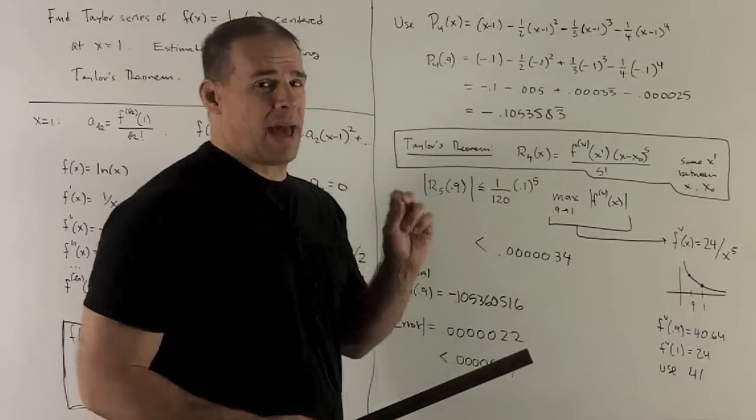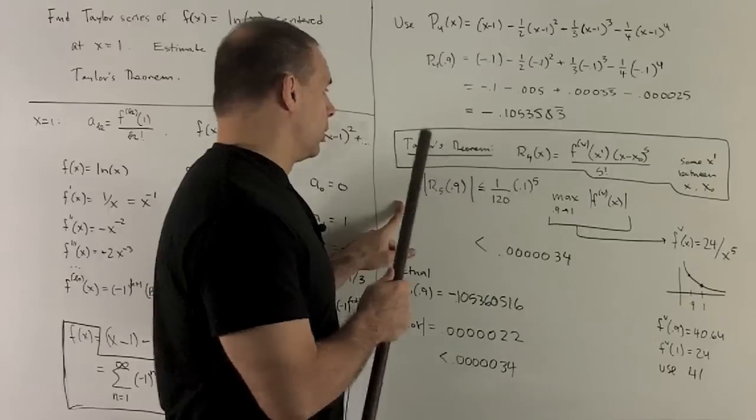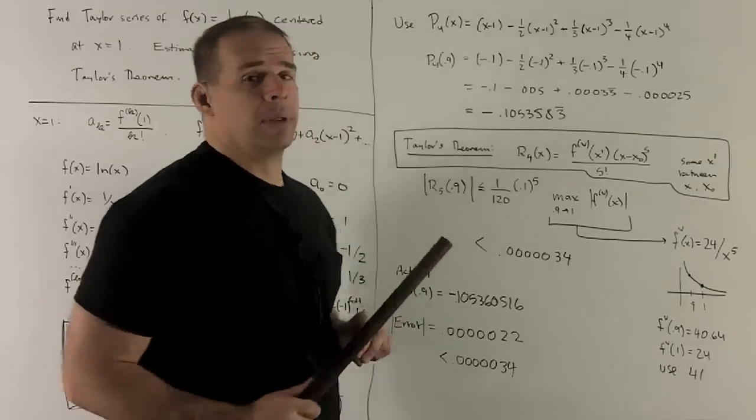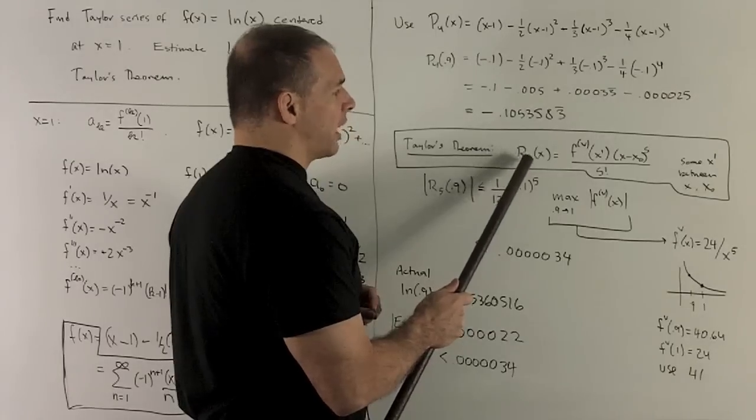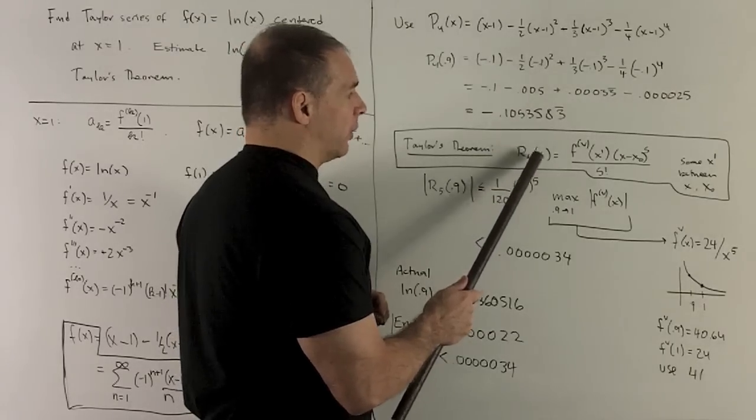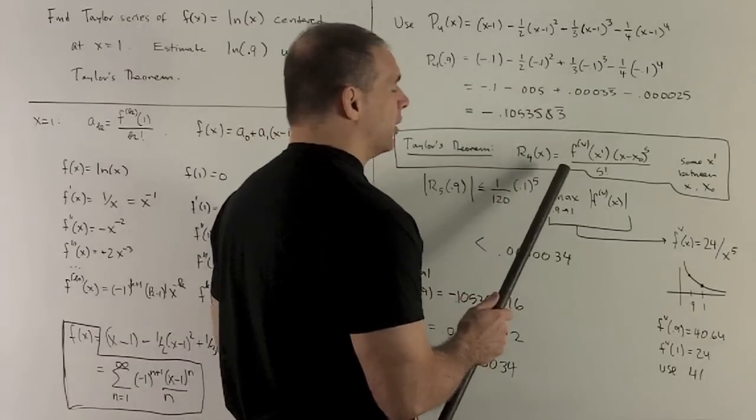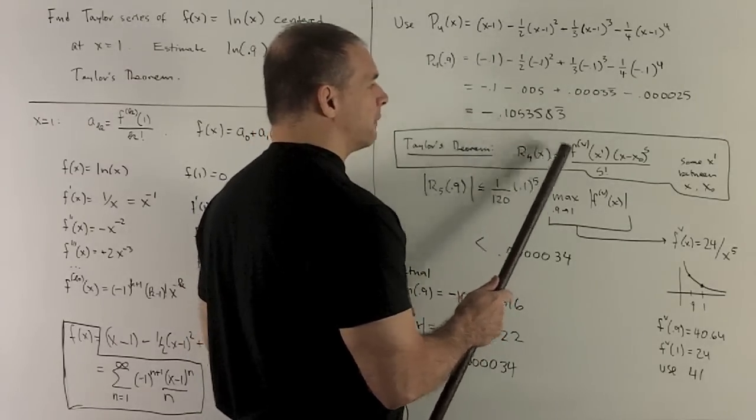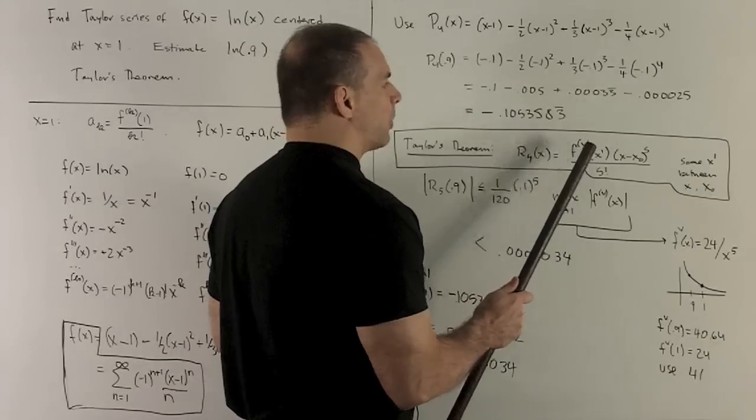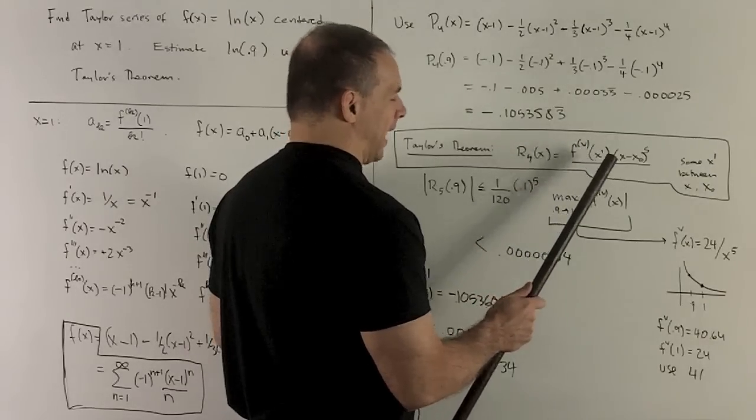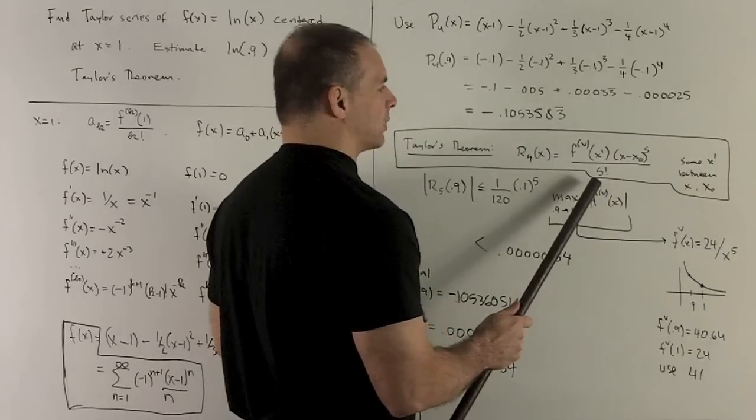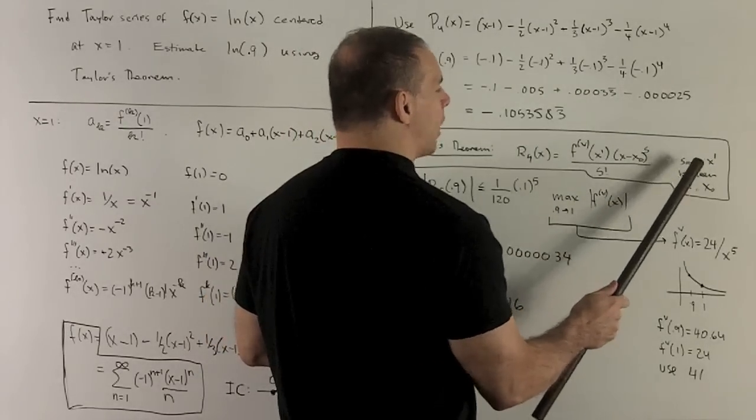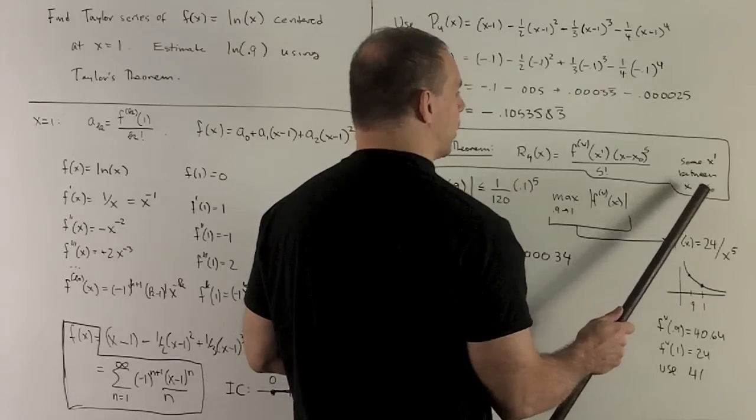Now, if we want to get a bound for the error in the estimate, we're going to appeal to Taylor's theorem. That's going to say the remainder for the fourth Taylor polynomial evaluated at x is going to be given by, you take the fifth derivative of your function f, there's going to be an x prime which we evaluate, and then we multiply by x minus x zero raised to the fifth power, divide by 5 factorial. This x prime is going to be somewhere between x and x zero.